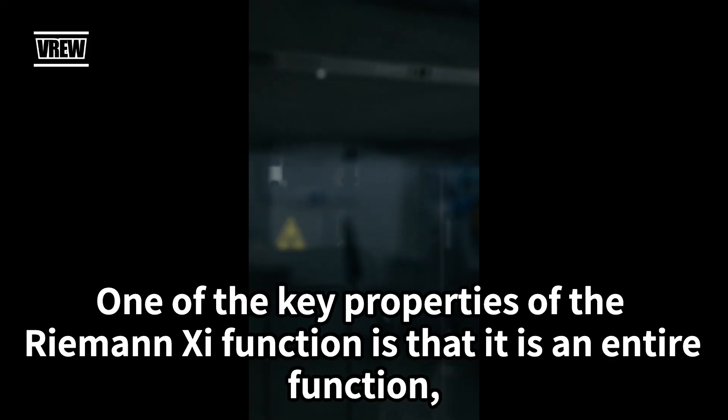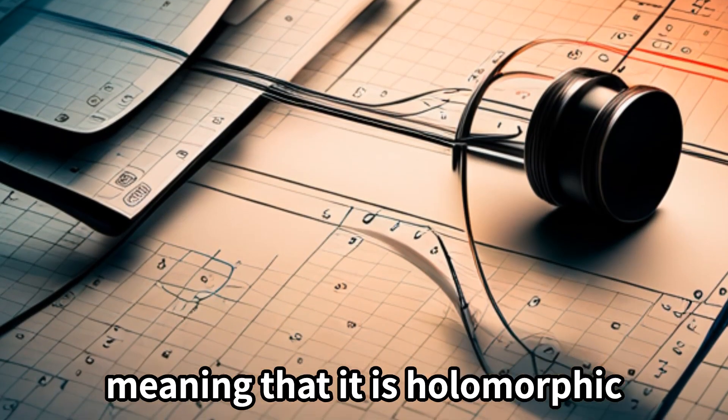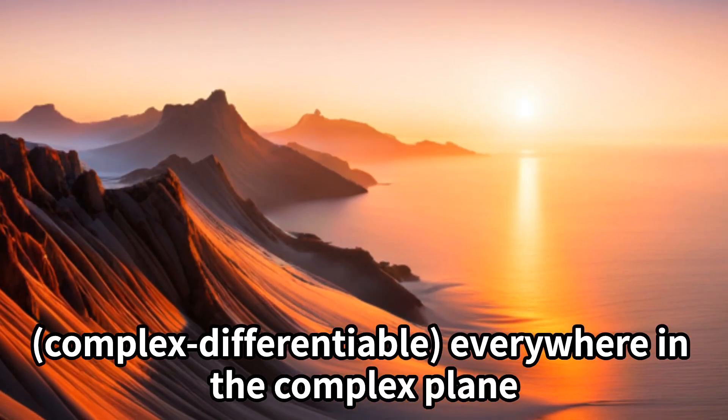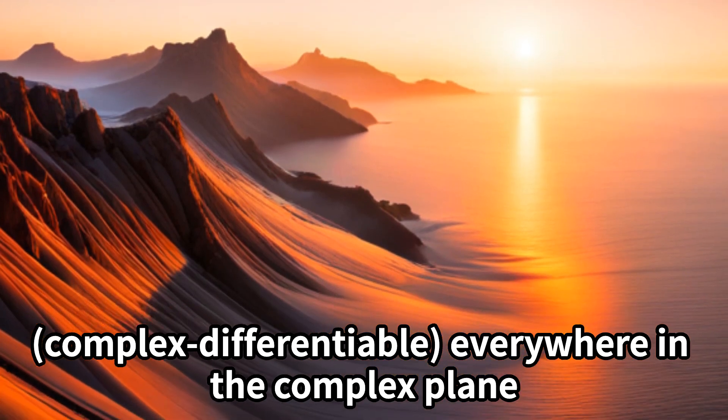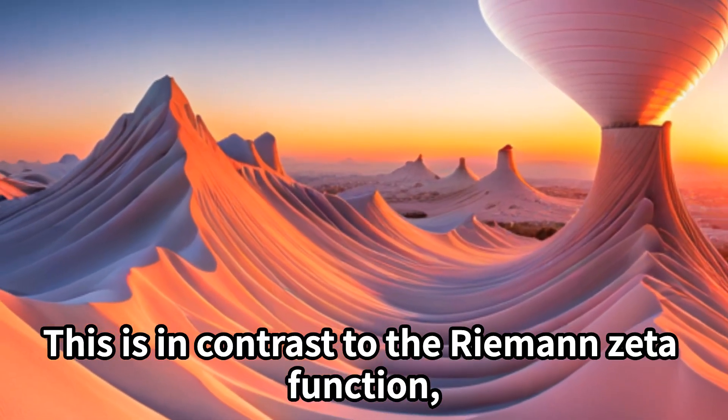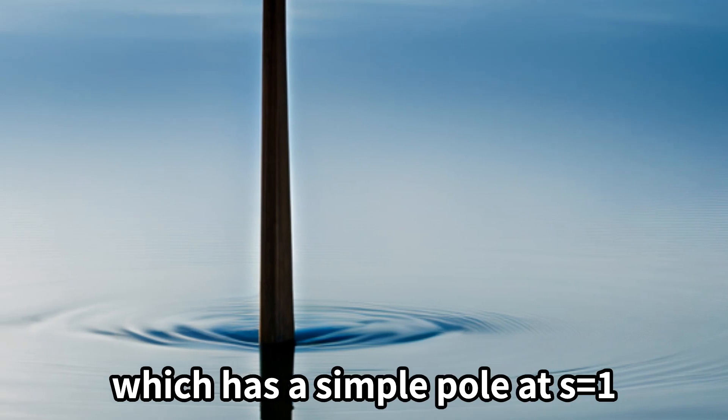One of the key properties of the Riemann-Chi function is that it is an entire function, meaning that it is holomorphic, complex differentiable everywhere in the complex plane. This is in contrast to the Riemann-Zeta function, which has a simple pole at s=1.